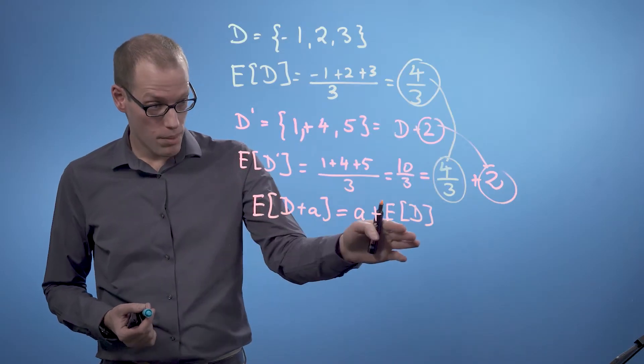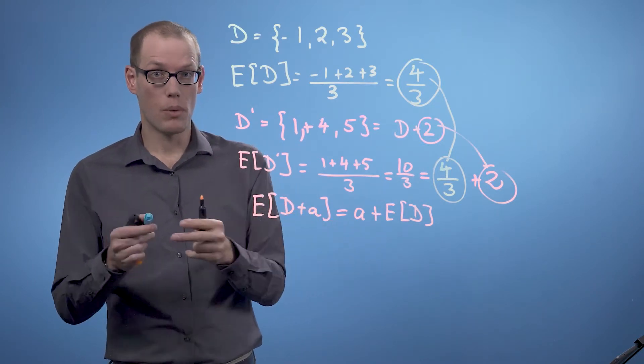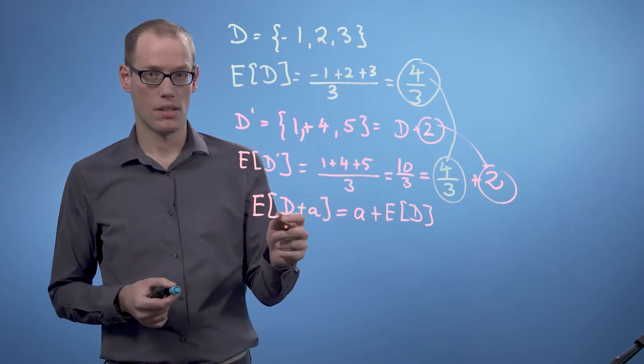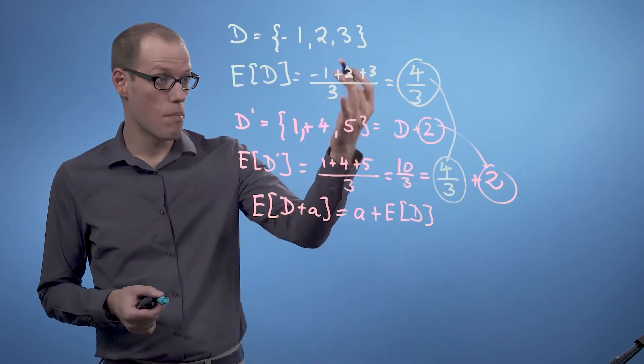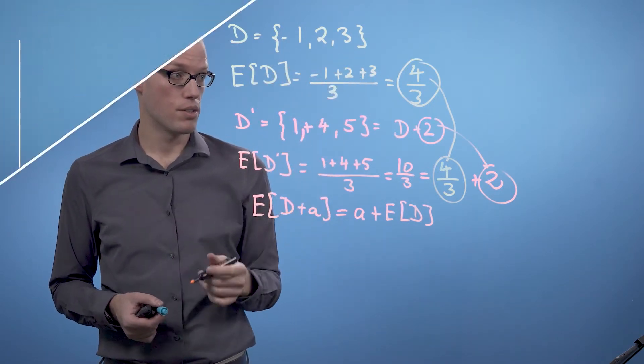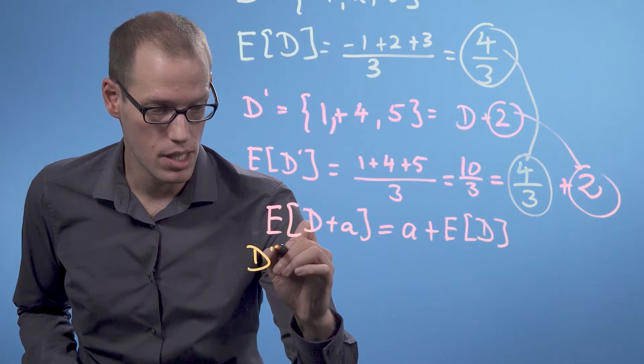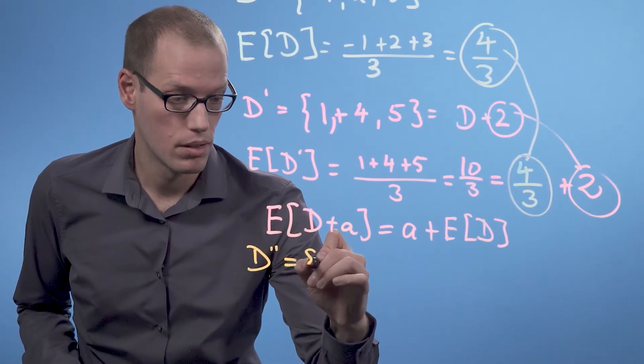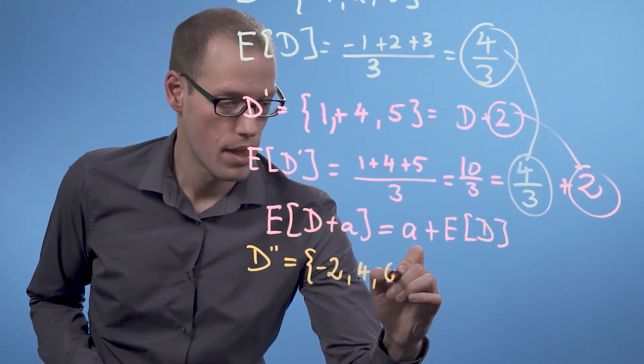Up to this point we know what happens to the mean of the data set when we shift the data set. But what happens if we stretch the data set? Let's say we stretch by a factor 2 and that means we multiply every individual component in the data set D by 2. Then we end up with this data set indicated by the red dots here and we define D' to be minus 2, 4, and 6.